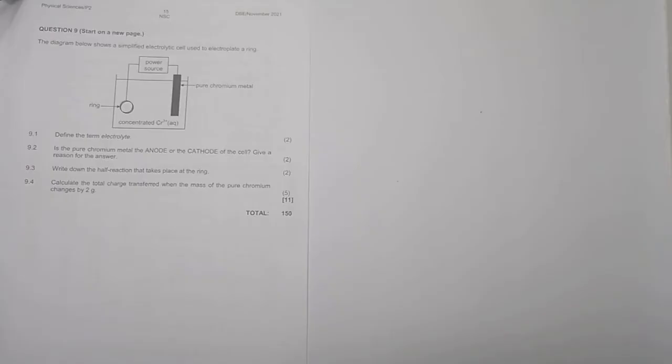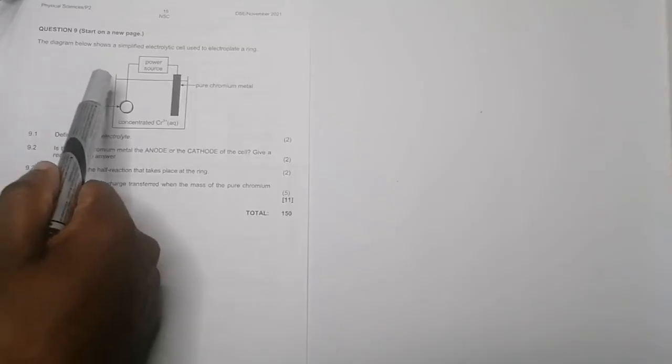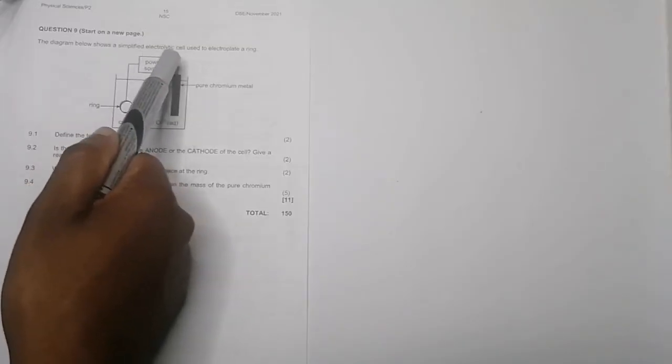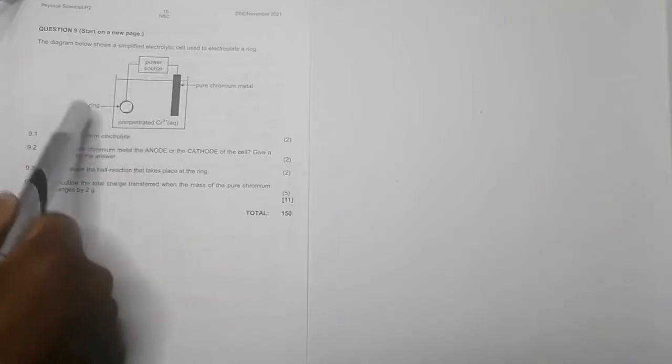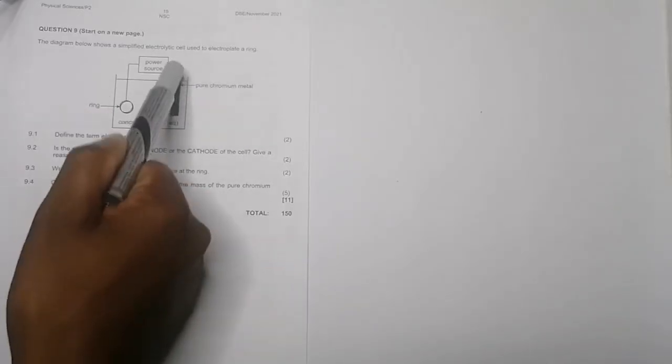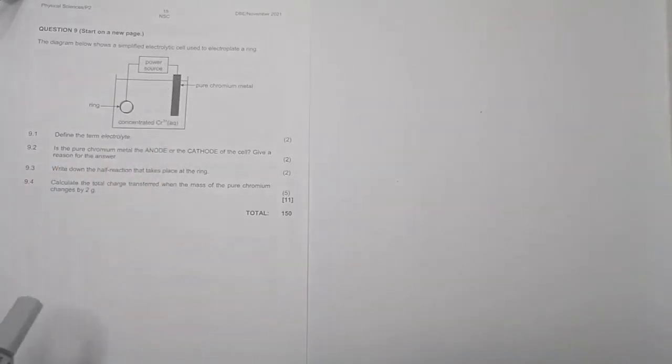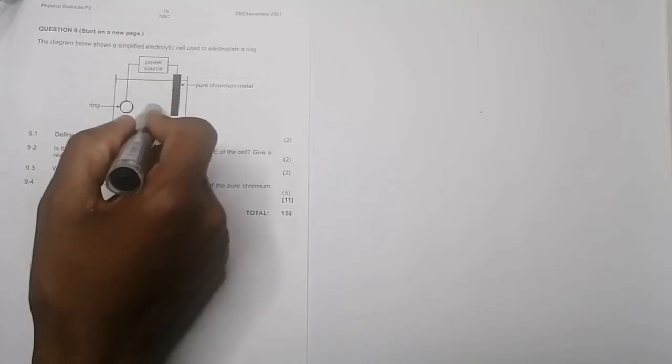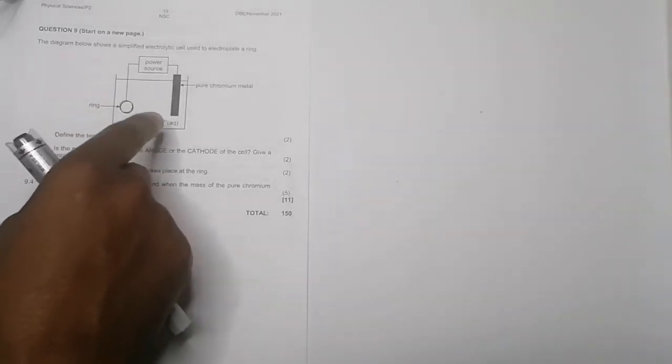Question 9.2: they've given us a simplified electrolytic cell used to electroplate a ring. Remember when we want to electroplate, we're going to put the pure substance here so that it ionizes and undergoes oxidation.